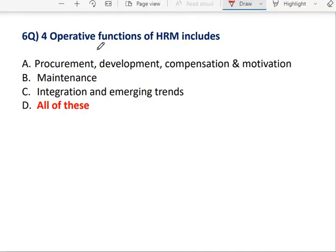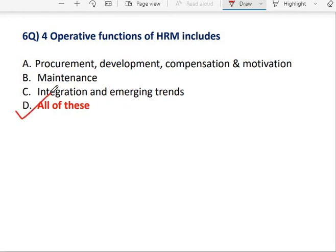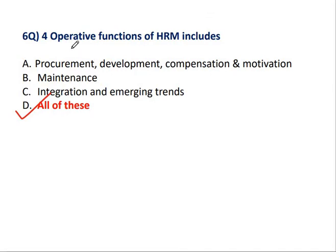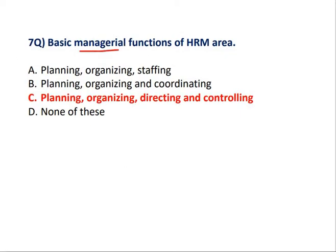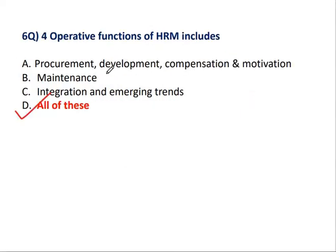Question No. 6: The four Operative Functions of HRM include Procurement, Development, Compensation, Motivation, Maintenance, Integration, and Emerging Trends — all of these are correct options because these are all the Operative Functions of HRM. Operative Function आपका वो हैं जहाँ हम Procurement करते हैं, Development करते हैं, Compensation plan करते हैं, Employee को कैसे motivate करेंगे वो plan करते हैं, Separation, Integration — these all functions come under the Operative Function.